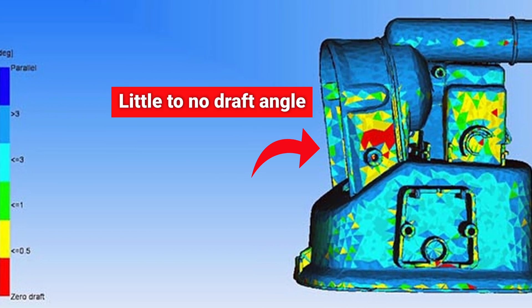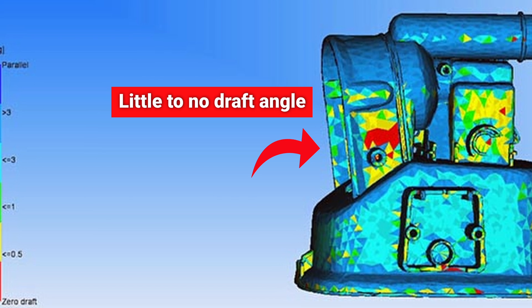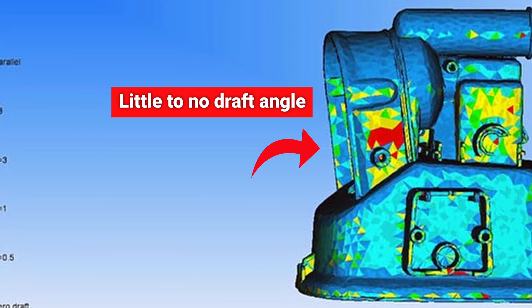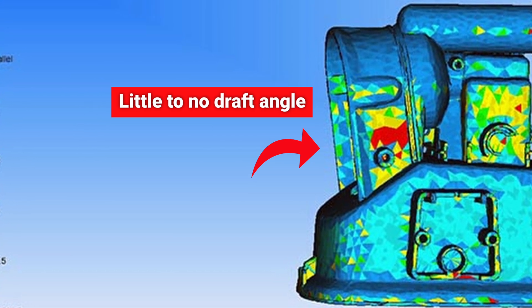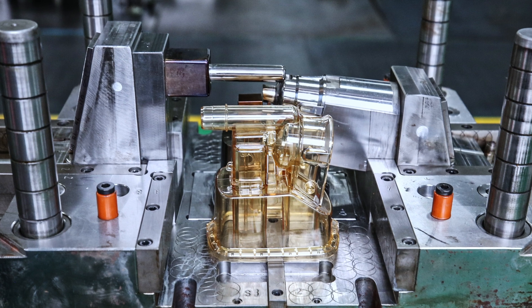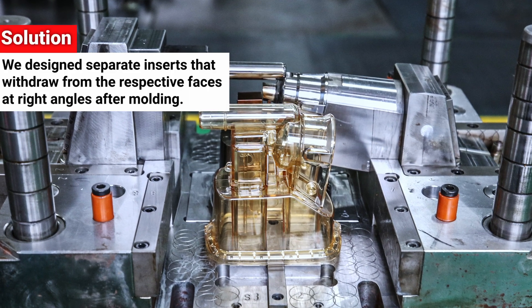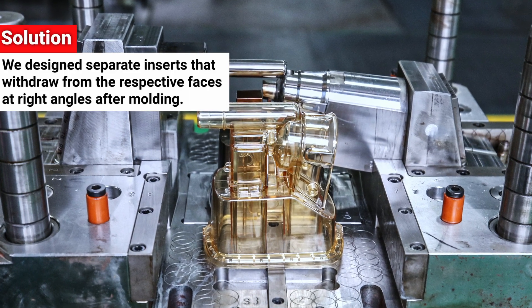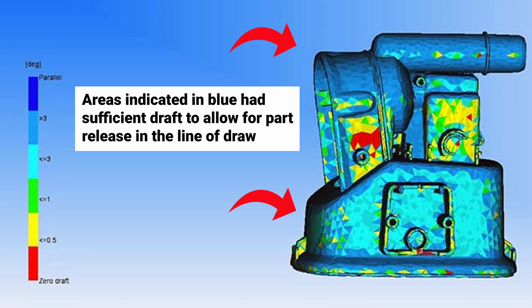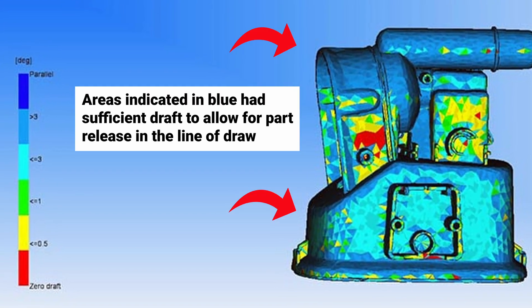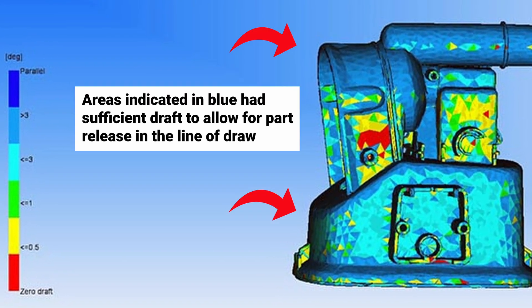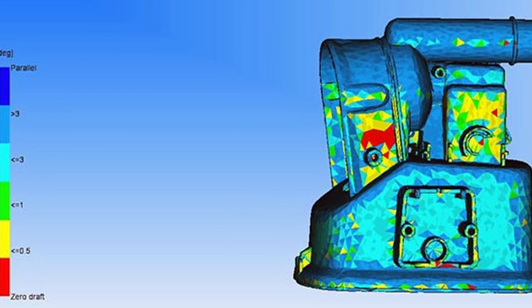Without some form of modification, it would be impossible to remove the part from the mold at this spot without scraping against the tool wall and probably destroying the part. The only way to mold features like these is to design separate inserts that withdraw from the faces at right angles after molding. Other areas, indicated in blue, had sufficient draft to allow for part release in the line of draw or the direction of tool opening.